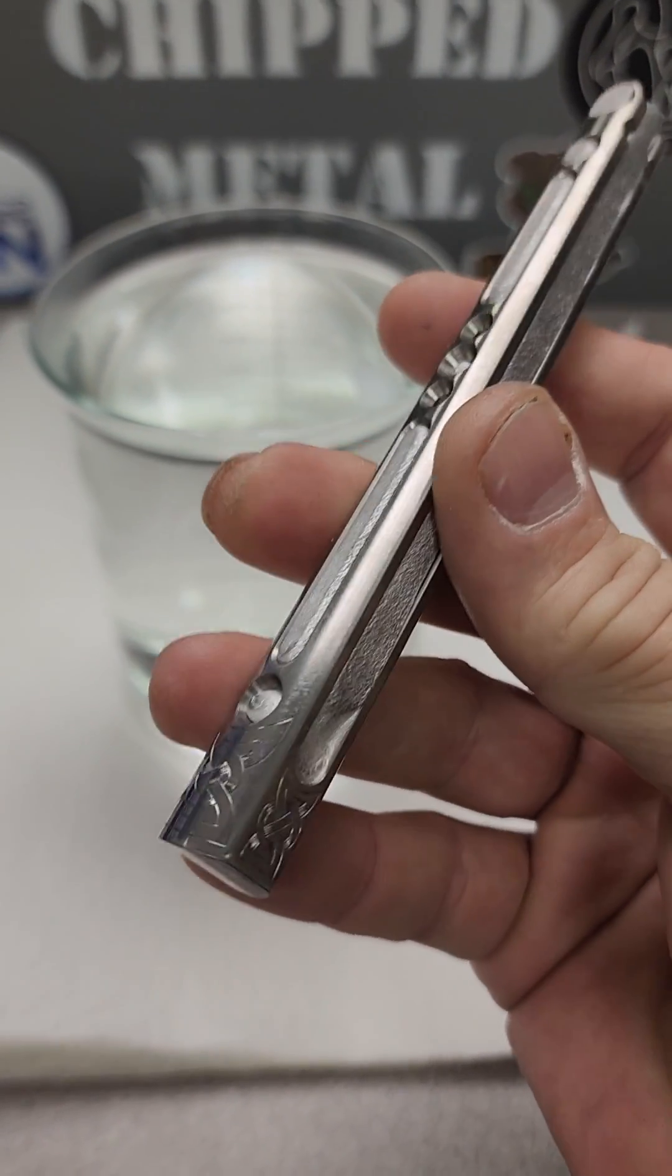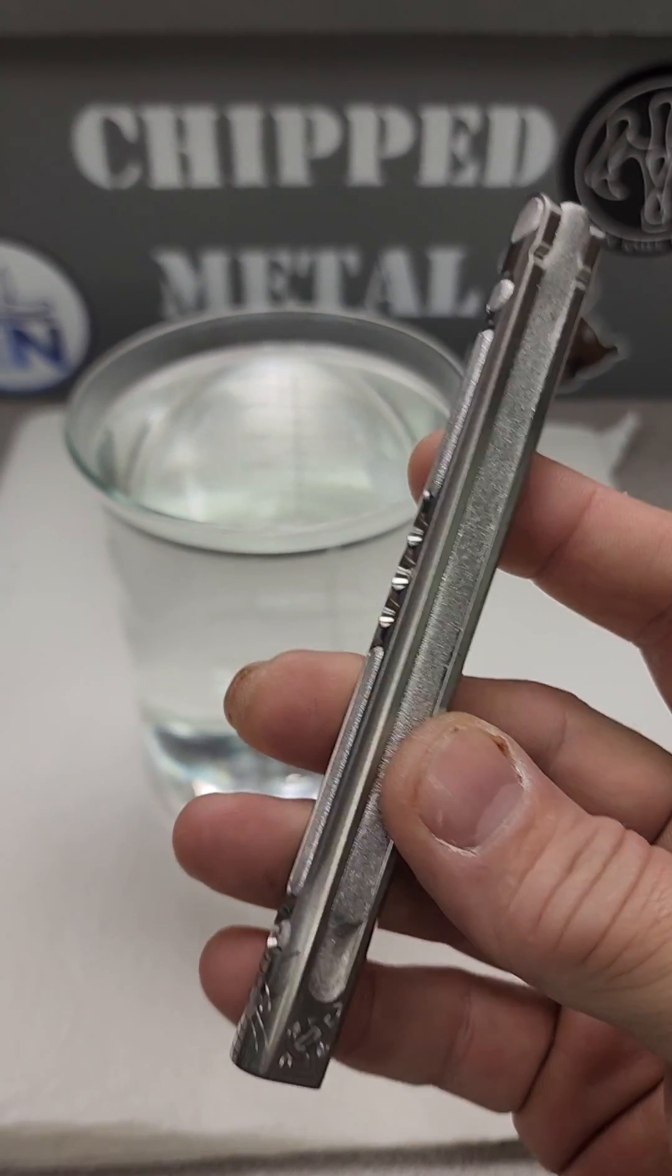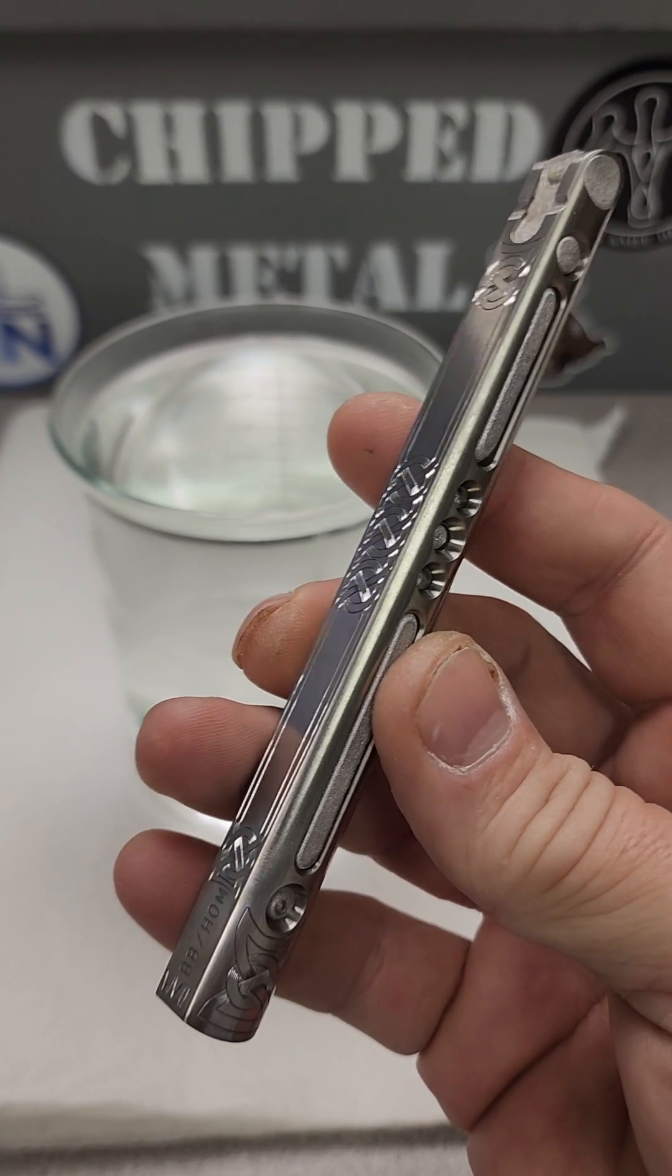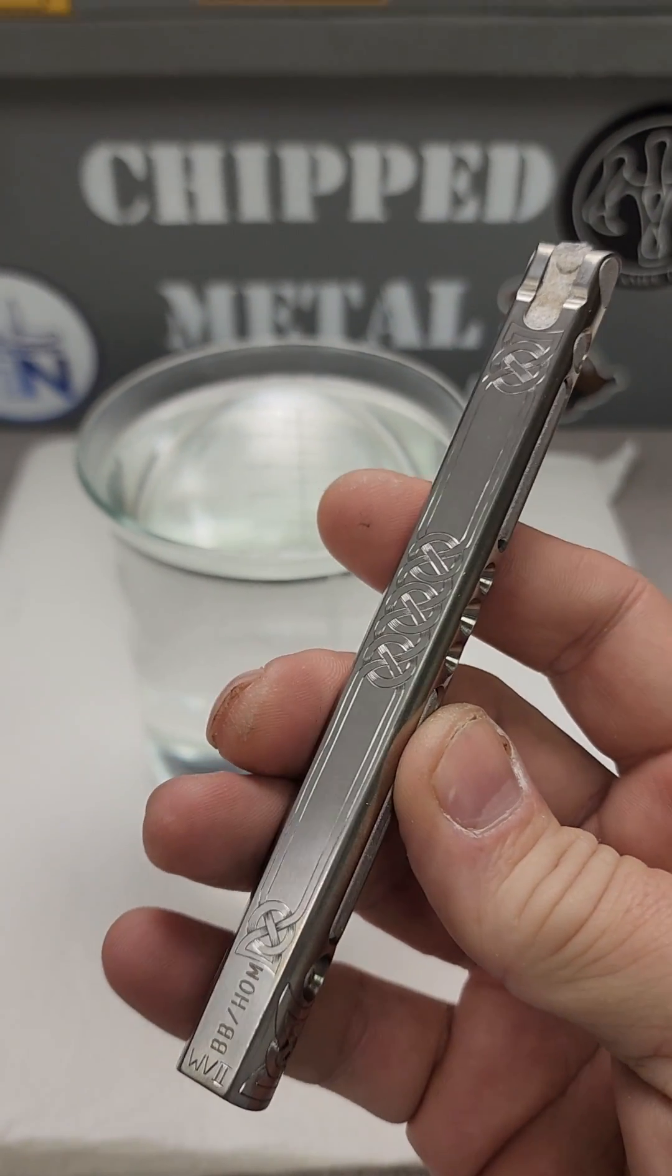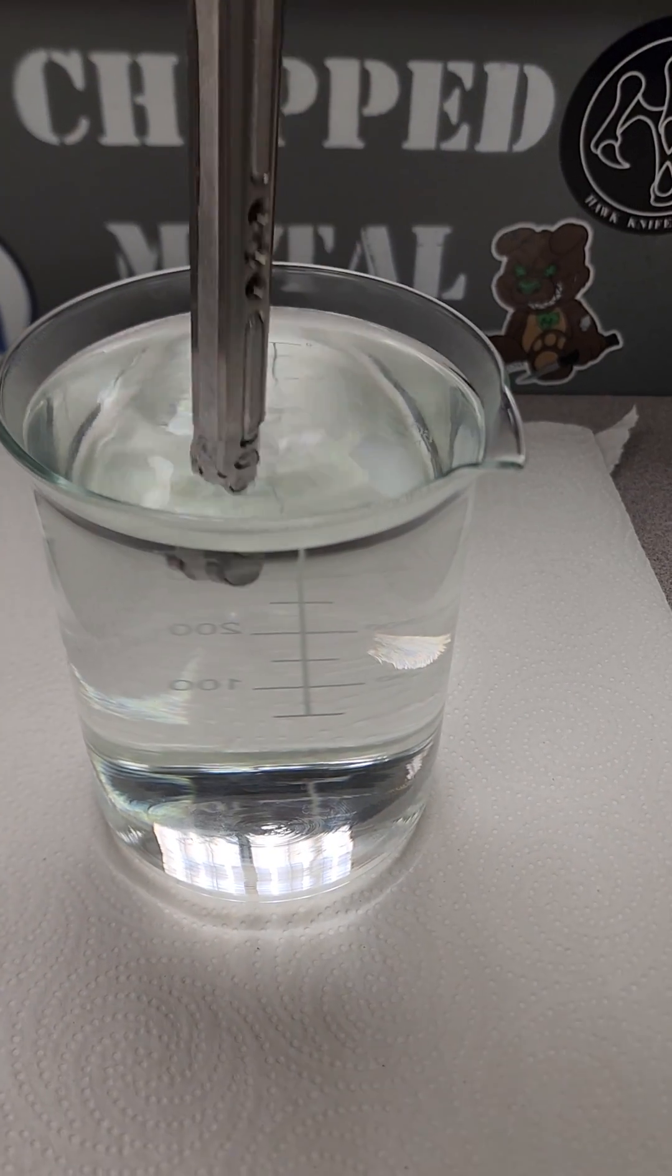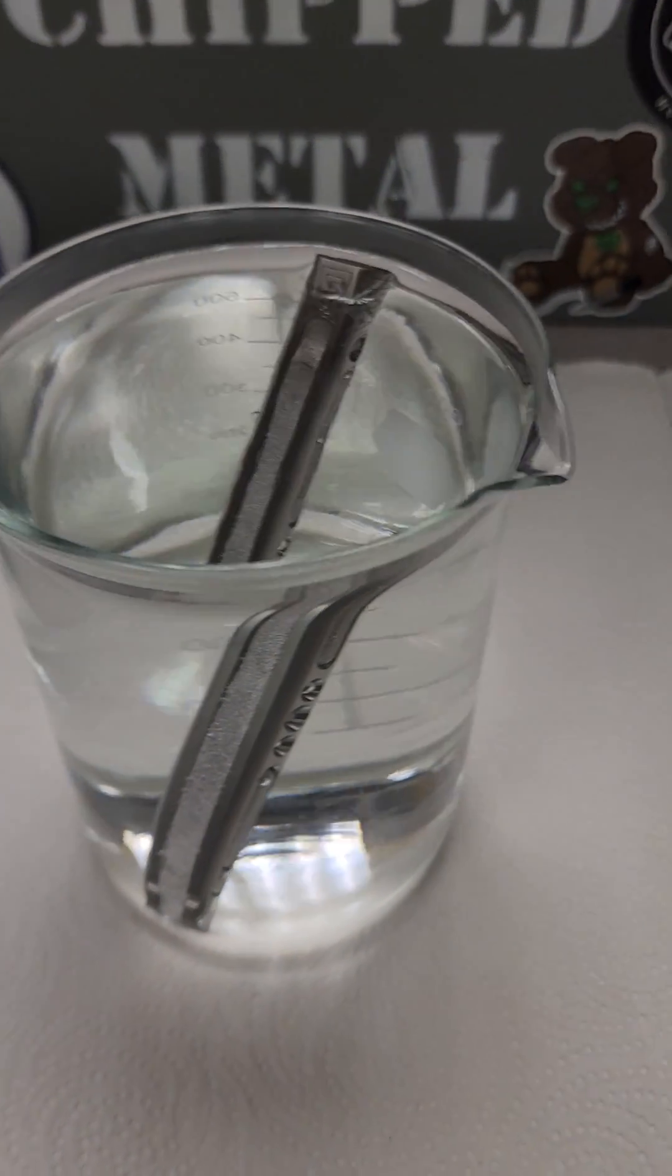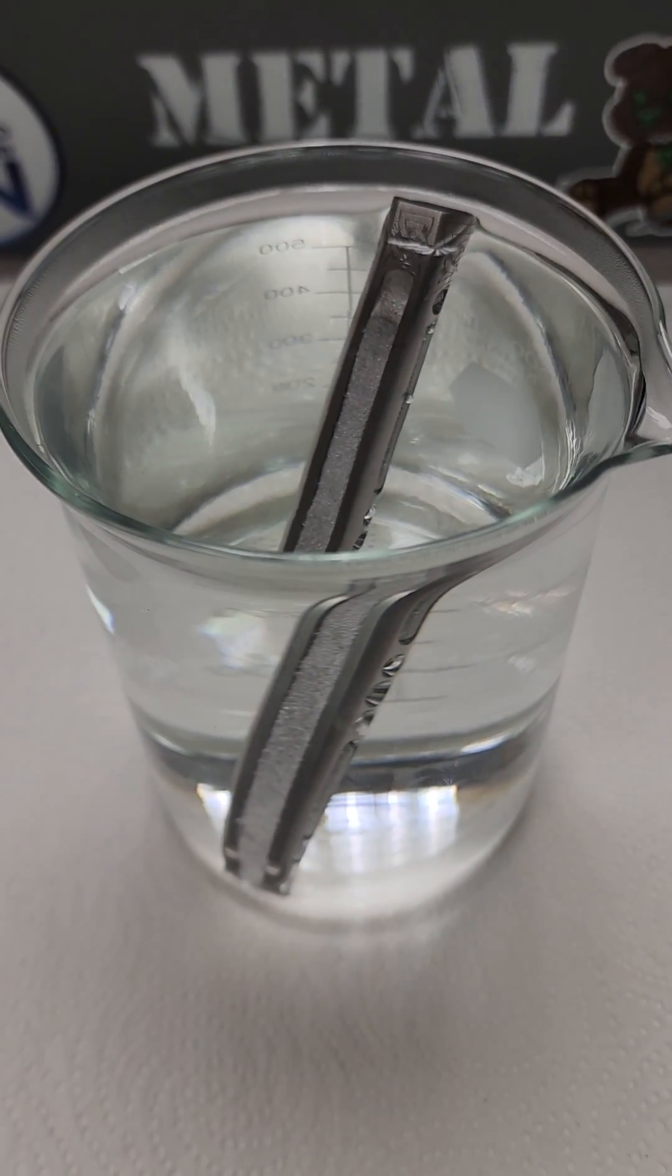So this is Cerro safe. It's a low melting point alloy that's a lead and bismuth base, and when I say low, it is real low. It will actually melt in hot water.